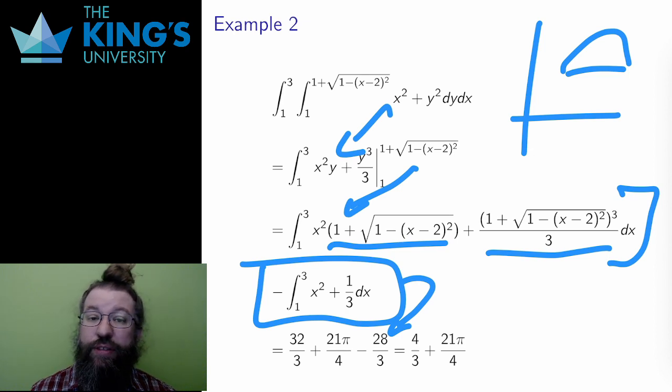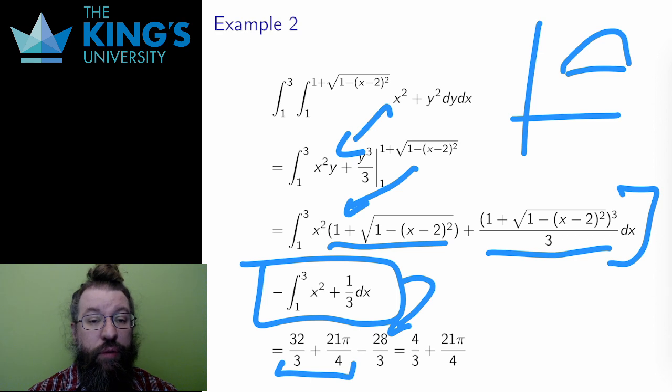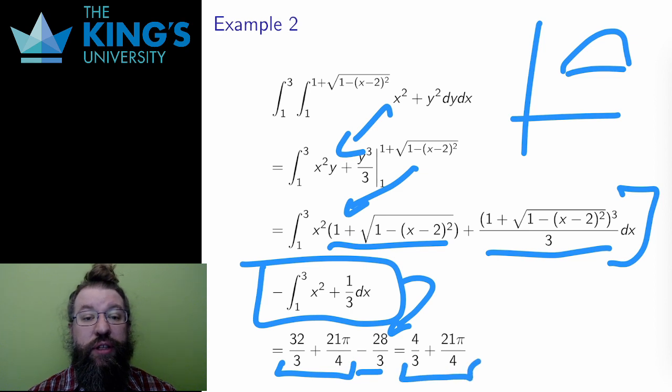If you want to see it, I've shown all the algebra in the notes, but I'll skip over it for here. The result of the first integral is 32/3 + 21π/4. And the result of the whole second part is the difference between these two things, which is 4/3 + 21π/4.